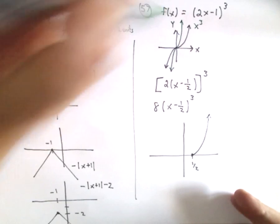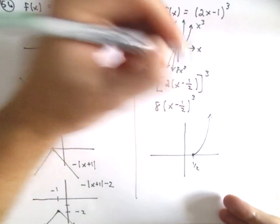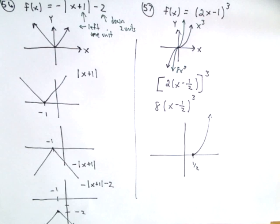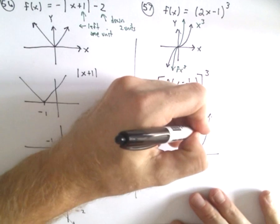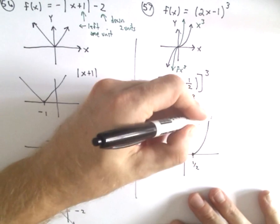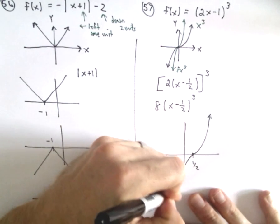8x³ is going to get bigger faster, and it's going to get smaller faster. So that would be 8x³. Same thing, you know, it's hard to obviously capture this without putting units on it, but it's definitely going to be getting bigger faster, it's going to be getting smaller faster.